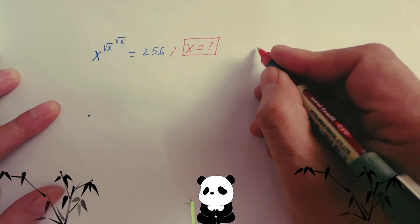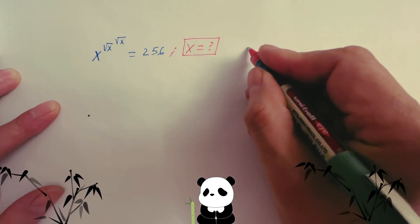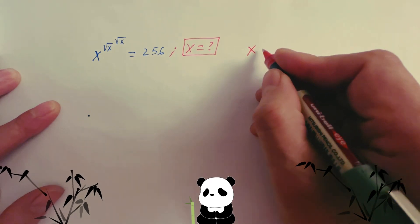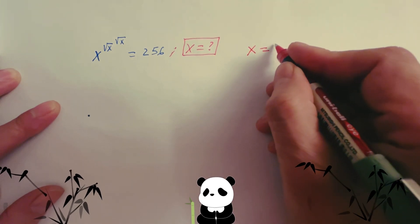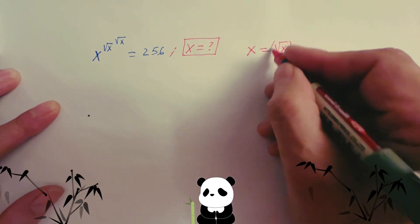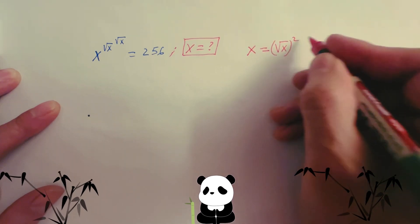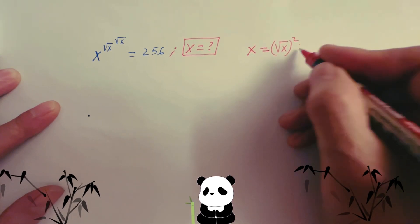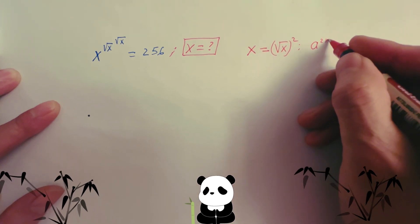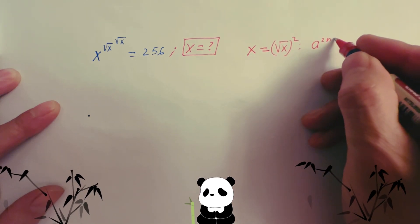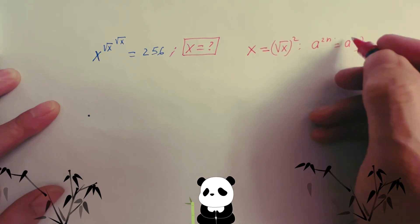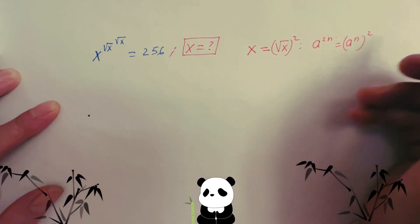You can rewrite x equals square root x, squared. You know the formula: a to the power 2n, you can write as a to the power n, and then 2 outside.